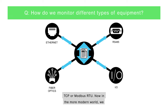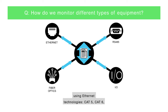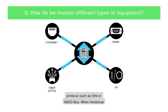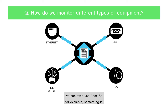Now in the more modern world, we do more data over other types of media, particularly using Ethernet technologies — CAT5, CAT6. We're really getting Modbus TCP or proprietary protocols such as Ion or ASCO bus. When distances, bandwidth, or noise immunity comes into play, we can even use Fiber.